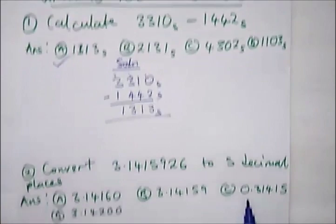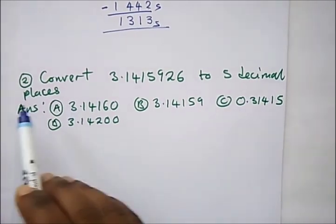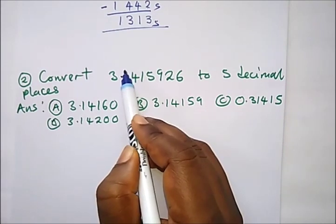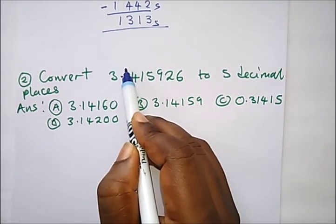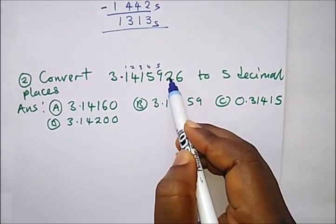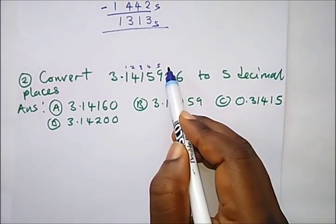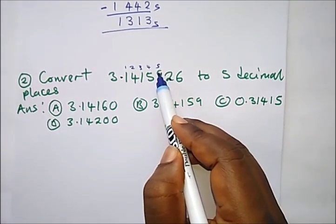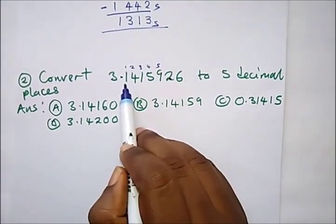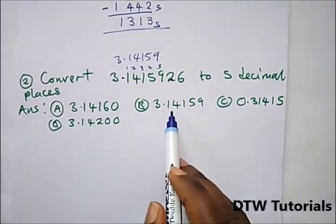The second question says: convert this to 5 decimal places. In decimal places, we start counting from the decimal point: 1, 2, 3, 4, 5. The next digit is not greater than or equal to 5, so it rounds down to zero. Our answer is 3.14159, and the correct option is option B.